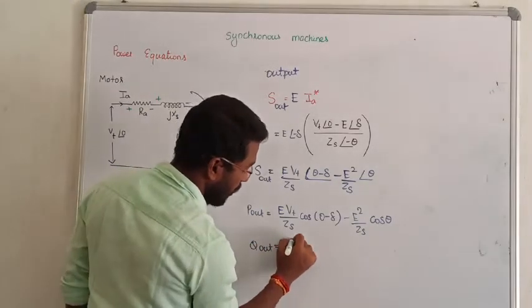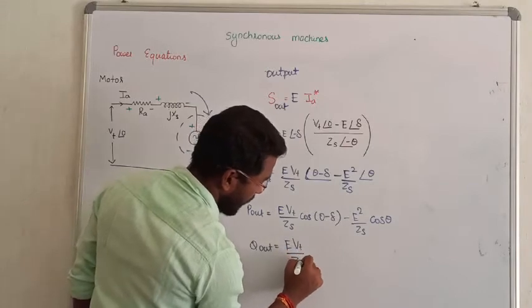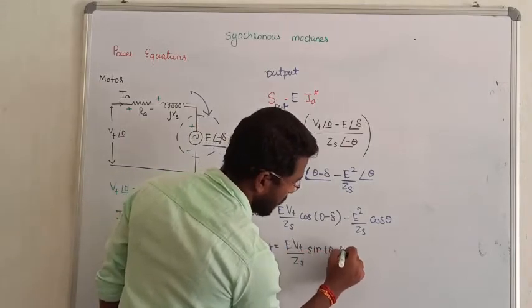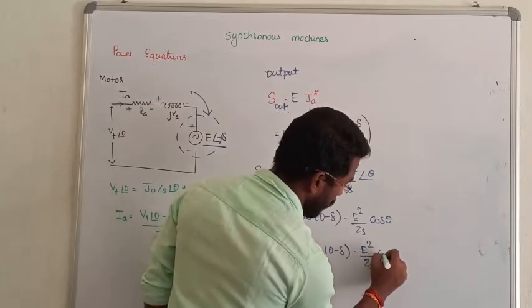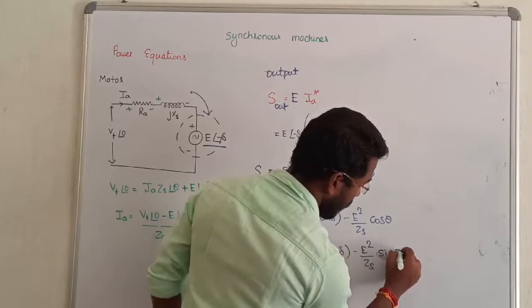What about the reactive power of the synchronous motor? So that is going to be E VT by Zs into sin of theta minus del minus E square upon Zs into sin theta.